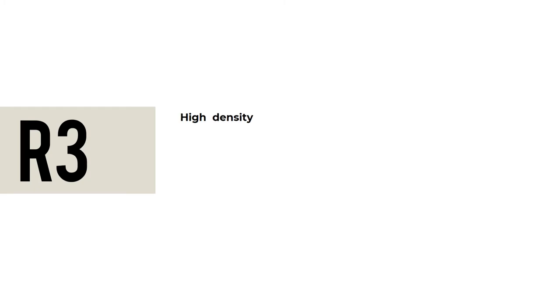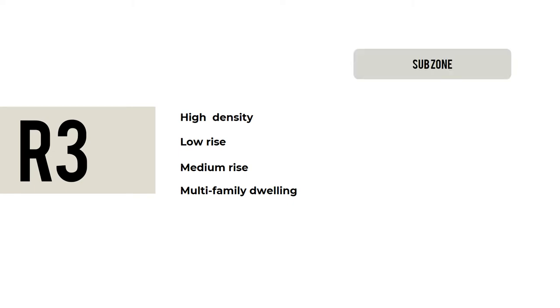R3 is characterized by high density, low rise to medium rise, multi-family dwelling. The subzones of R3 are basic R3, which features 1 to 3 stories, and maximum R3, which features 6 to 12 stories. In R3, you can find row houses as a type of dwelling unit.